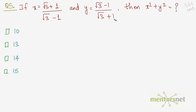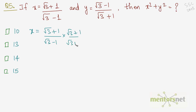Finally, question 5: find x² + y² given the values of x and y. We simplify x by rationalizing. x = (√3 - 1)/(√3 + 1); multiply numerator and denominator by (√3 + 1). The denominator becomes (√3)² - 1² = 3 - 1 = 2, and the numerator becomes (√3 + 1)².